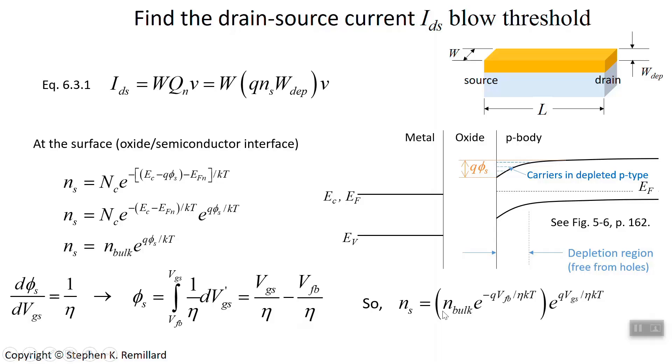So we'll rewrite the surface carrier concentration as what it is in the bulk, times e to the minus this thing over kt, e to the minus q this thing over kt. And I'll go ahead and split the exponential. So if you need to pause the video, just to make sure you see going from here, using this and getting this. Go ahead, pause.